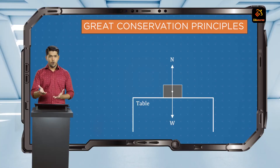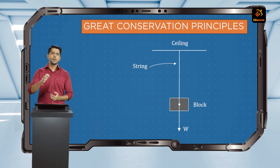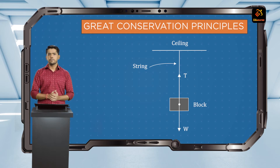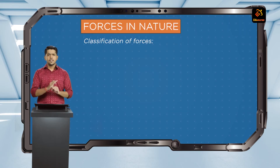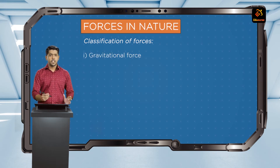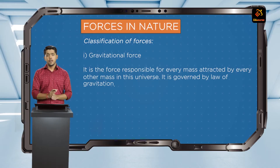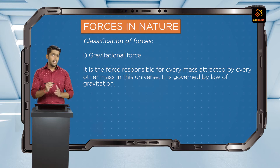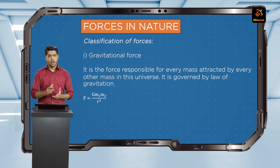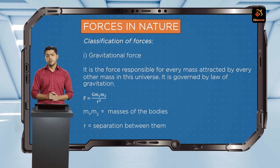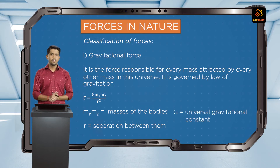We call the force exerted by the table on the block as the normal reaction, and the force applied by the string on the block upwards as the tension in the string. As it turns out, we can classify all of these different kinds of forces into four categories. Number one is the gravitational force — the force responsible for every mass being attracted by every other mass in the universe. It is governed by the law of gravitation: F equals G M1 M2 by R squared, where M1 and M2 represent the masses of the bodies, R represents the separation between them, and G is the universal gravitational constant.